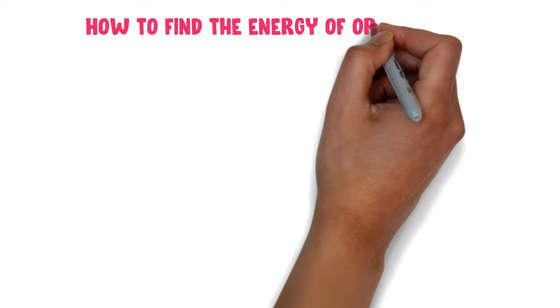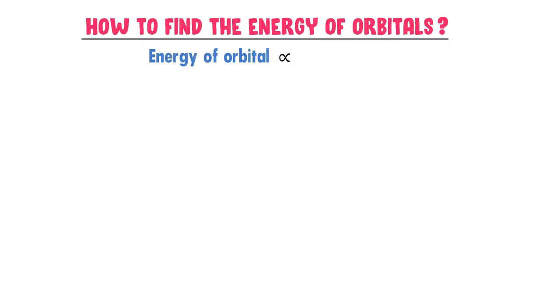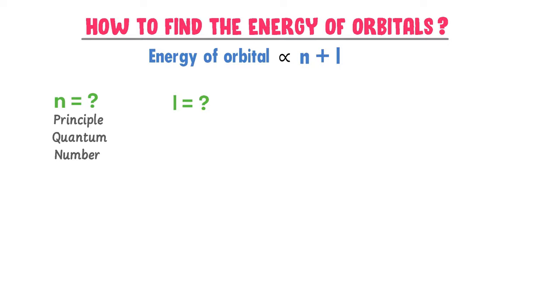You must also learn how to find the energy of any orbital. The energy of orbitals is directly proportional to n plus l. We have already learned in our previous lecture that n is the principal quantum number and l is the azimuthal quantum number.